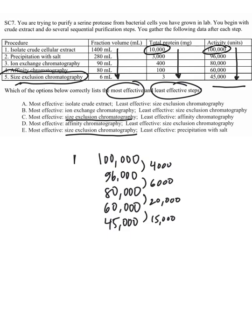So it was step four that caused the biggest loss of enzyme — 20,000 units lost — making it the least effective step. Even though your specific activity went up, look at how much enzyme you lost. The step was somewhat effective because specific activity increased, but you categorize it as least effective because you lost the most enzyme in that step compared to all other steps. So affinity chromatography, step four, was the least effective step.